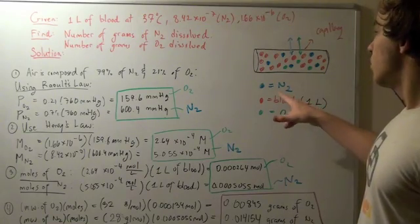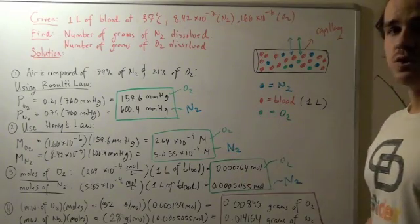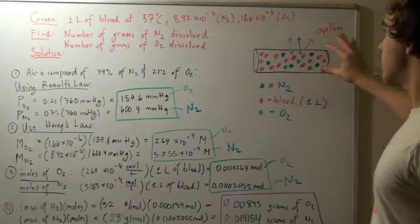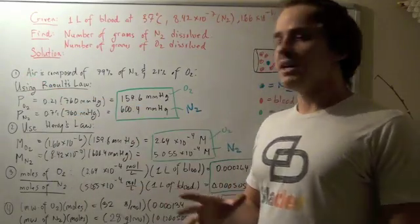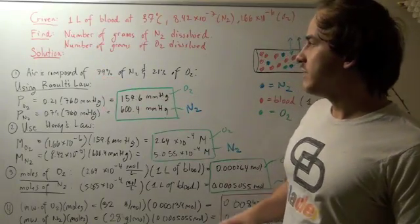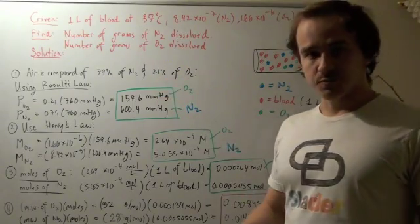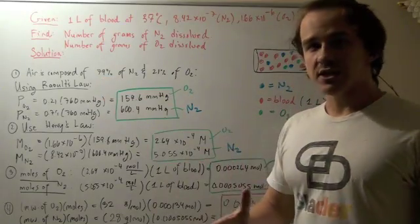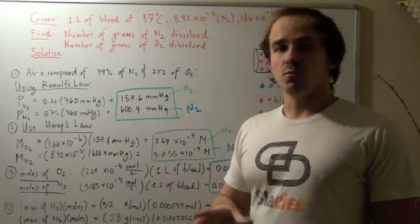We want to find the number of blue molecules and the number of green molecules in terms of grams found within one liter of this blood. The first step is to realize that air is composed of approximately 79% nitrogen and approximately 21% oxygen. This translates to 0.79 mole fraction of nitrogen and 0.21 mole fraction of oxygen.